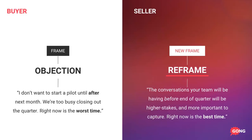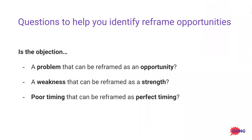You've taken the root of the objection and uprooted it. Here are a few questions to think about when coming up with your own reframes: Is that objection a problem that can be reframed as an opportunity? Is it a weakness that can be reframed as a strength? Is it poor timing that can be reframed as perfect timing? Put your objections through those three questions and you'll come up with some very creative objection handling rebuttals and reframes.